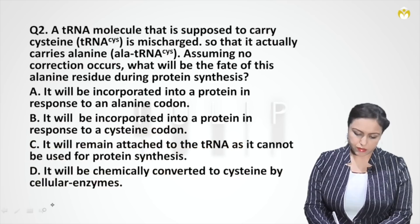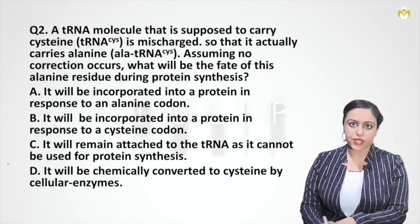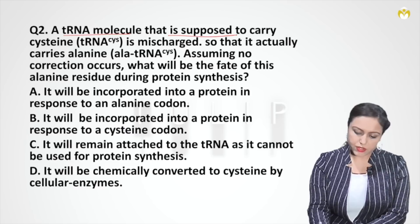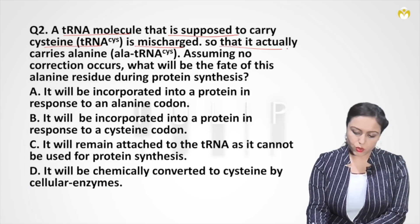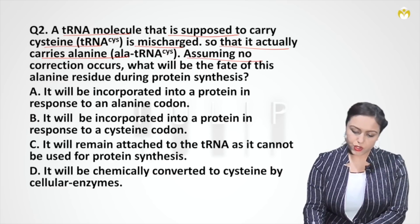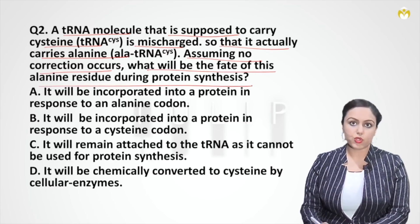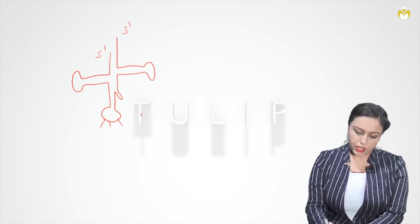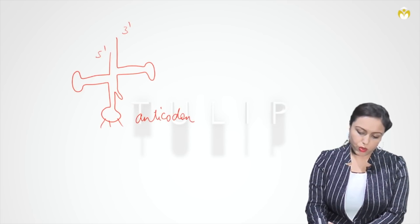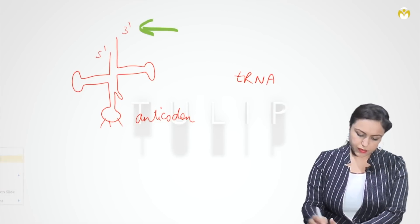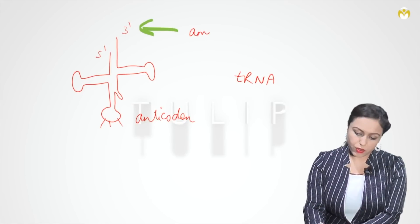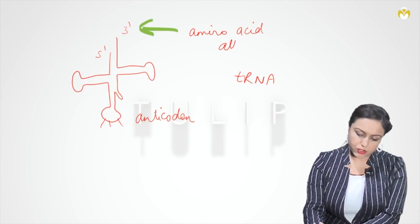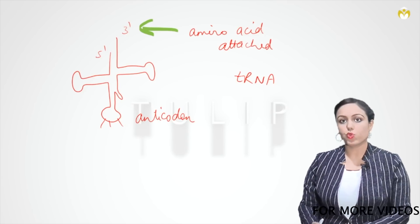The next question: a tRNA molecule that is supposed to carry cysteine is mischarged so that it actually carries alanine. Assuming no correction occurs, what will be the fate of this alanine residue during protein synthesis? Here are the basics: the tRNA has a five-prime end, three-prime end, and an anticodon loop. Amino acids get attached at the three-prime end of tRNA, while the codon is present on mRNA.